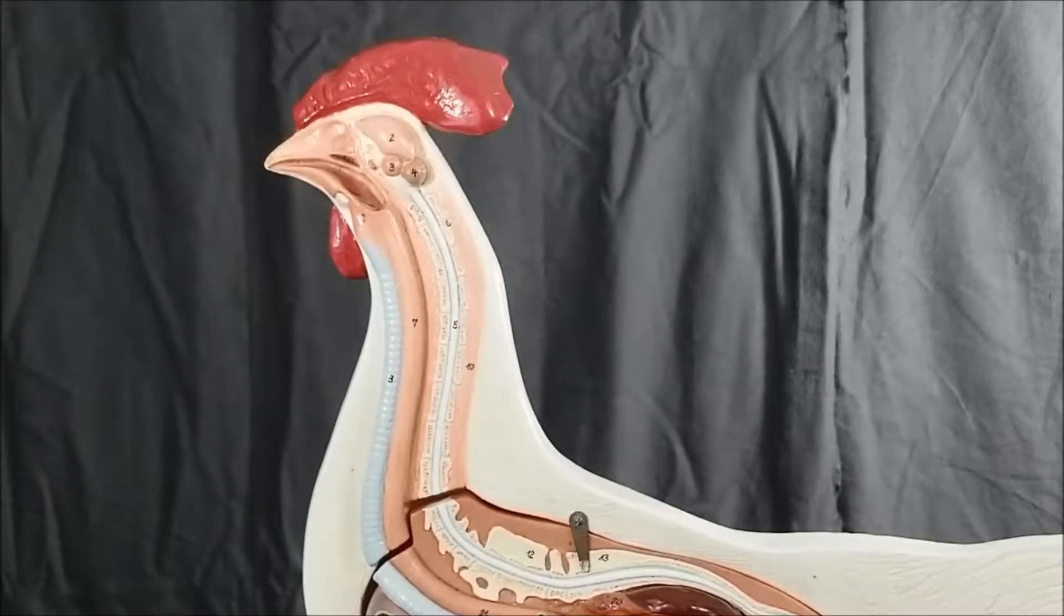Here we have the chicken model as is covered for Biology 182, Zoology, here at Golden West College in Huntington Beach, California.